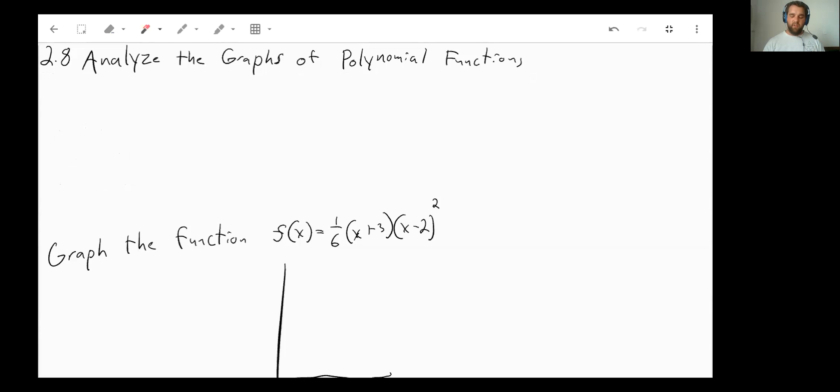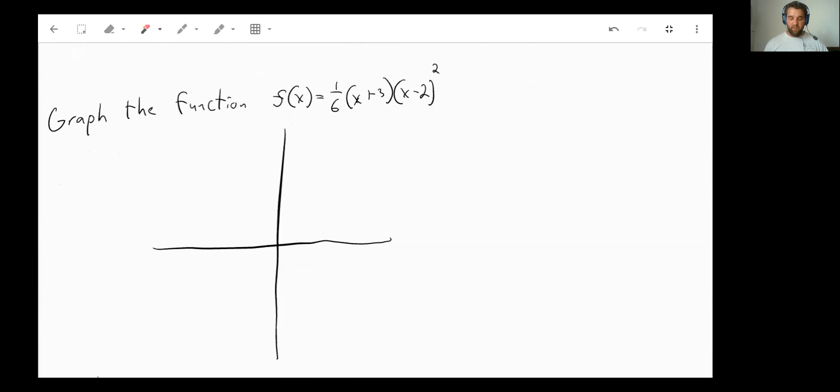But what we do need to do is we need to be able to graph this function. This is an intercept form, so we know where it has its x-intercepts at, which happens at negative 3, so we have an x-intercept right there, and it also has an x-intercept at positive 2.